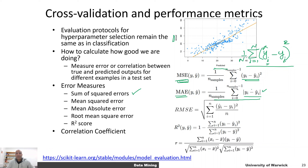You can also measure root mean square error. You can also measure the correlation between predicted and actual values — ideally, if there is no error, predicted and actual should all lie on a line, so the Pearson correlation between them should be exactly 1.0.